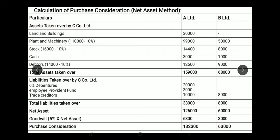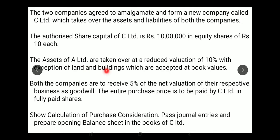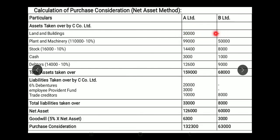Under the net asset method, we record assets taken over: land and buildings, plant and machinery, stock, cash, and debtors. For A Limited, land and buildings are taken at balance sheet value since they are accepted at book value. Plant and machinery, stock, and debtors are reduced by 10%. Stock in A Limited's balance sheet is 16,000, minus 10% gives 14,400.